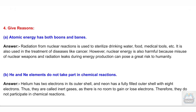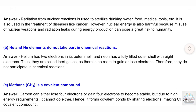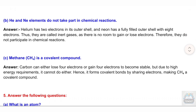B. Helium and Neon elements do not take part in chemical reactions. Answer: Helium has two electrons in its outer shell, and neon has a fully filled outer shell with eight electrons. Thus, they are called inert gases, as there is no room to gain or lose electrons. Therefore, they do not participate in chemical reactions.